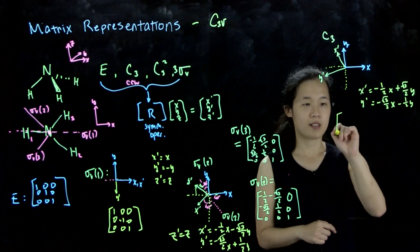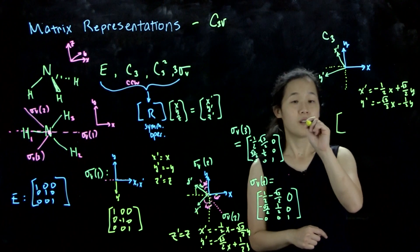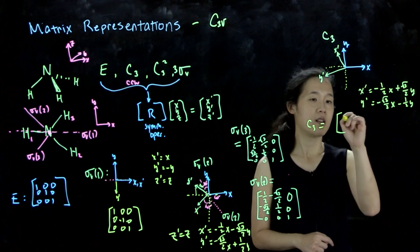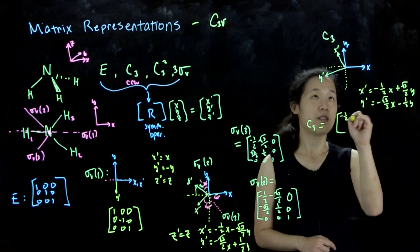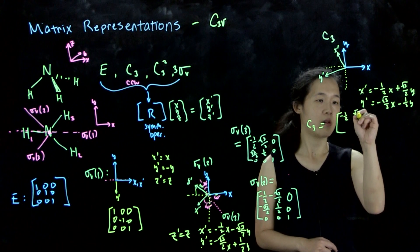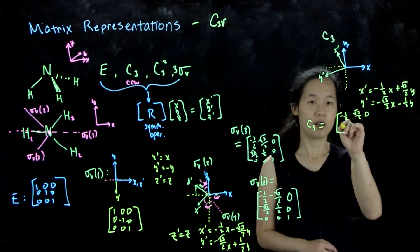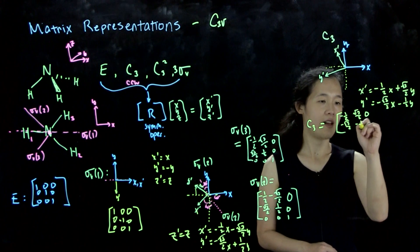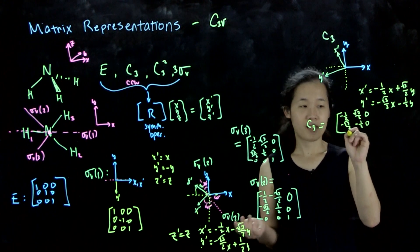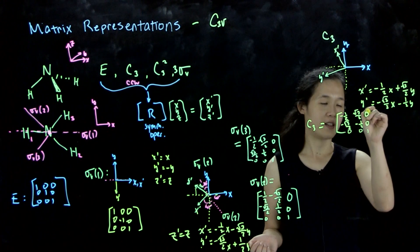So this matrix is going to be equal to C3 equals negative one-half, plus root 3 over 2, zero, negative root 3 over 2, negative one-half, zero. And again, because it contains the z axis, it's zero, zero, one in the last row.